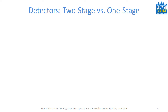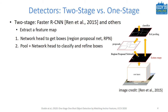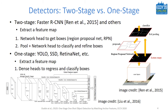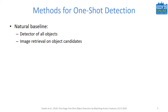Before going into one-shot detection, I'll say a couple of words on regular object detection methods. Most methods fall into one of two types: two-stage and one-stage. Two-stage methods, like Faster R-CNN, process the extracted feature map in two stages. First, a neural network head extracts bounding boxes around plausible object locations. Then features from selected locations are fed into another head that classifies and possibly refines boxes. One-stage methods, like YOLO or SSD, try to do both classification and localization in one step. There is no clear winner and both types are extensively used.